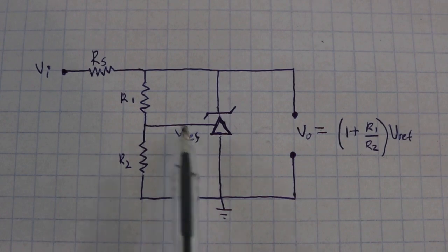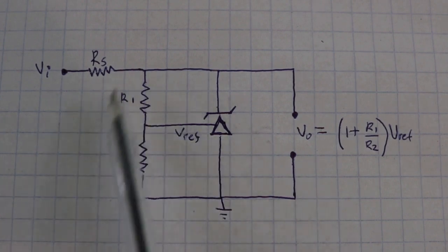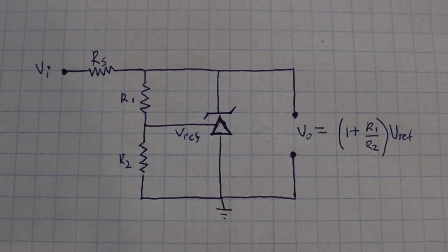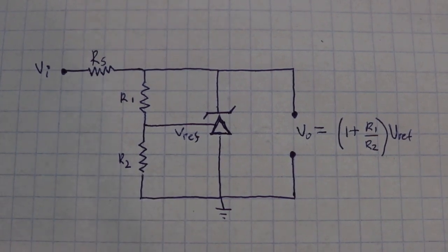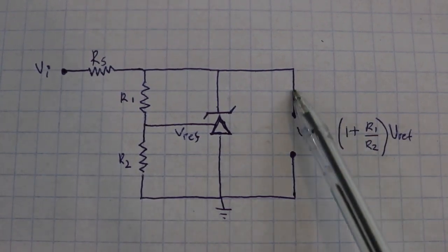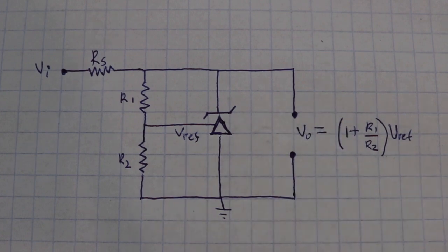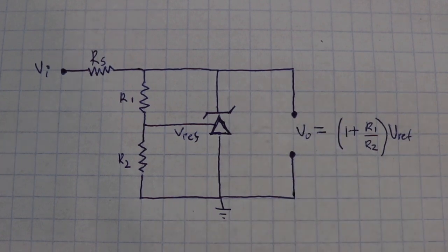And this voltage is controlled by this voltage divider formed by R1 and R2. And this characteristic of a varying output voltage will be used in our constant current source.